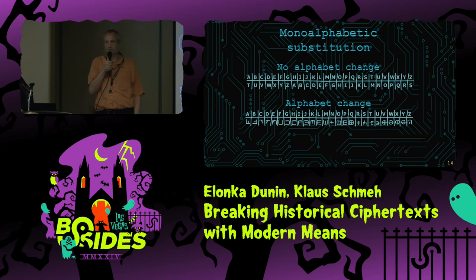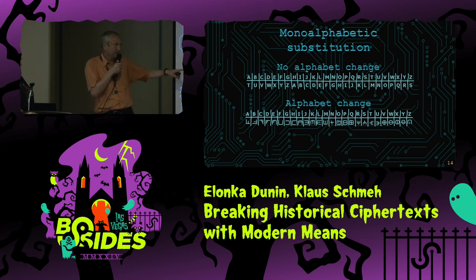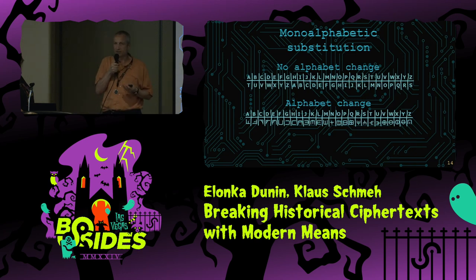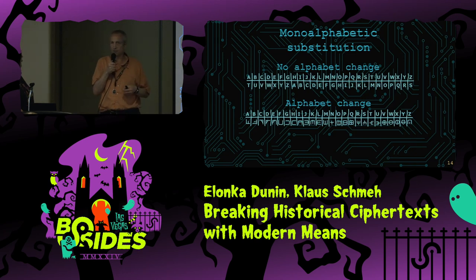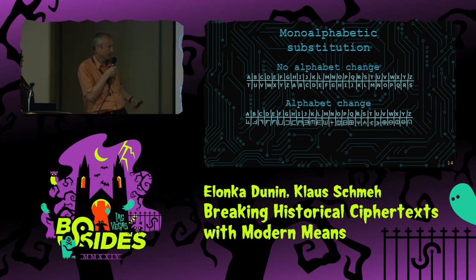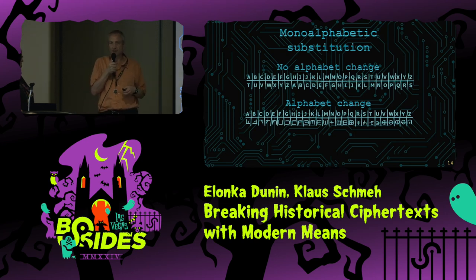Every letter of the alphabet is replaced with a symbol. In this case, the symbol might be something that is not an ordinary letter, not an ordinary number, or can even be something you have never seen before. But it's still some kind of symbol or glyph.